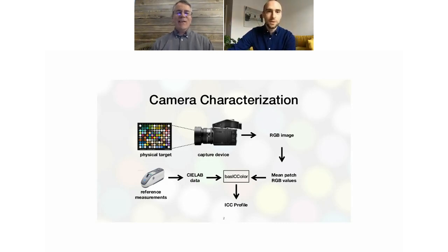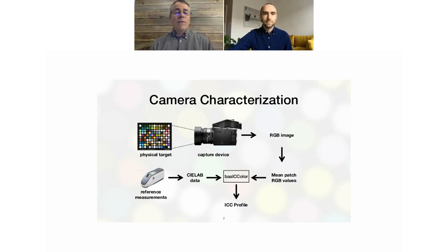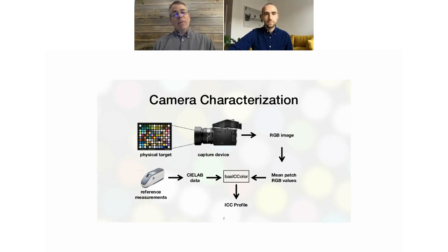Dave is going to start us off and introduce the target, the thought process behind it, and how he went about creating it. So we're going to dive in and talk a little about the big picture of what it means to actually characterize your camera. The idea is we're going to start with that physical target — that's the NGT2 — and image or scan it with some device, which could be a camera or a flatbed scanner. After we take that image, we've got an RGB image.